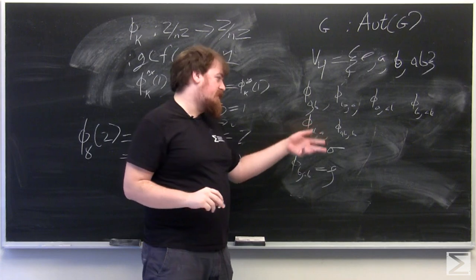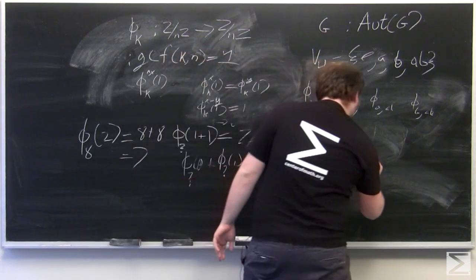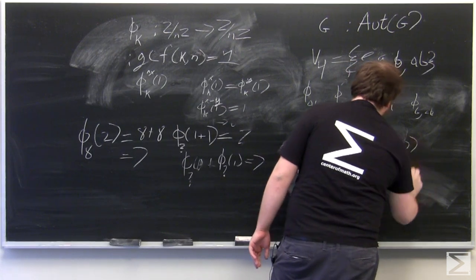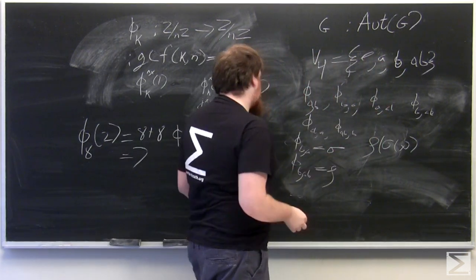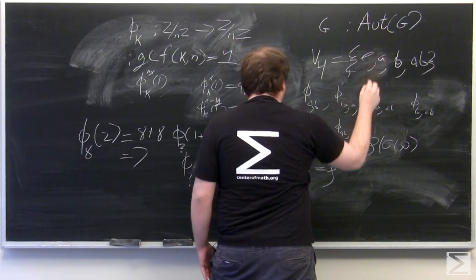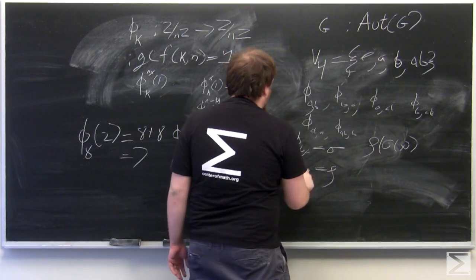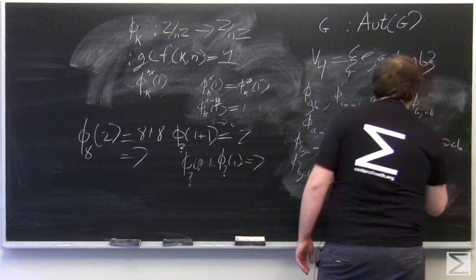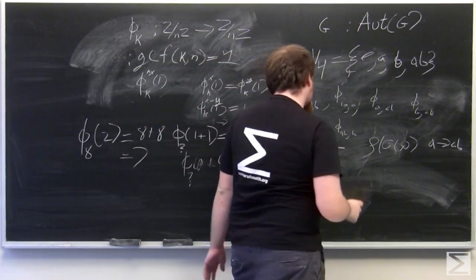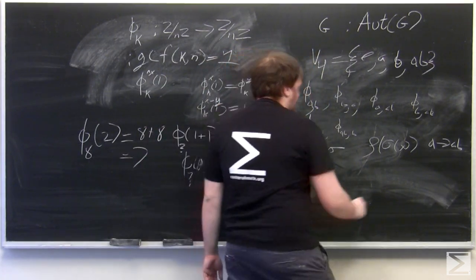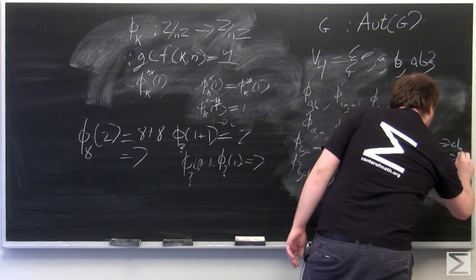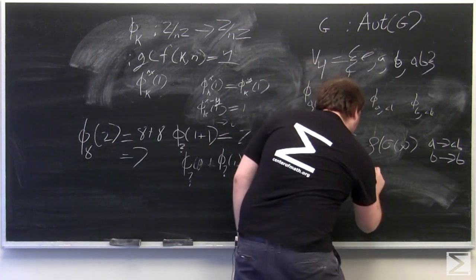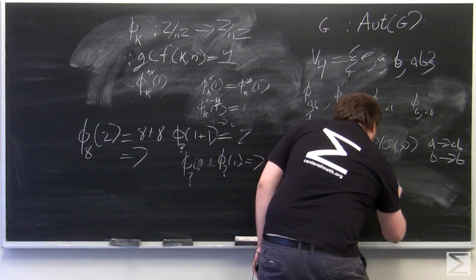If we look at rho of sigma of X, where X is an element of V4, this automorphism will send A first through sigma, so A gets sent to B and then B gets sent to AB. So A gets sent to AB here and B gets sent to A and A gets sent to B. B gets sent to itself by the composition.